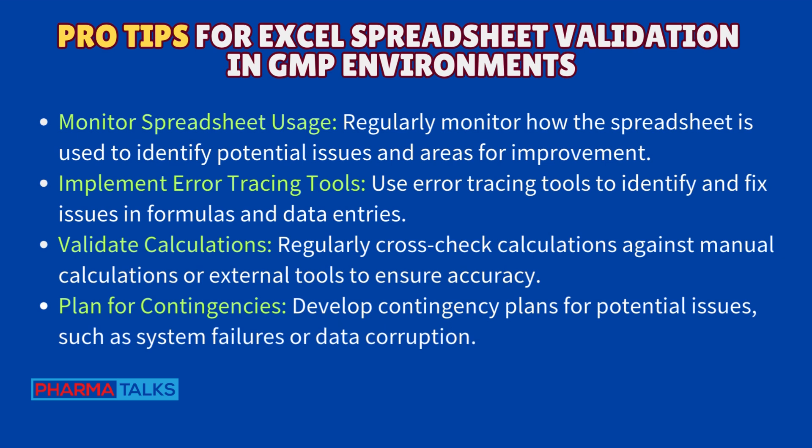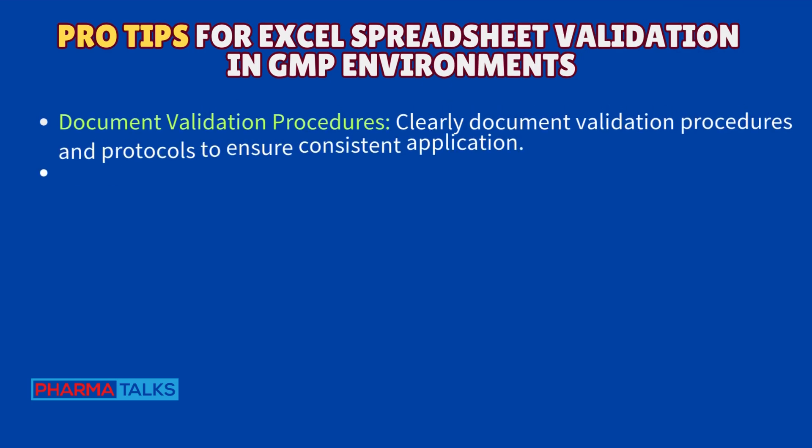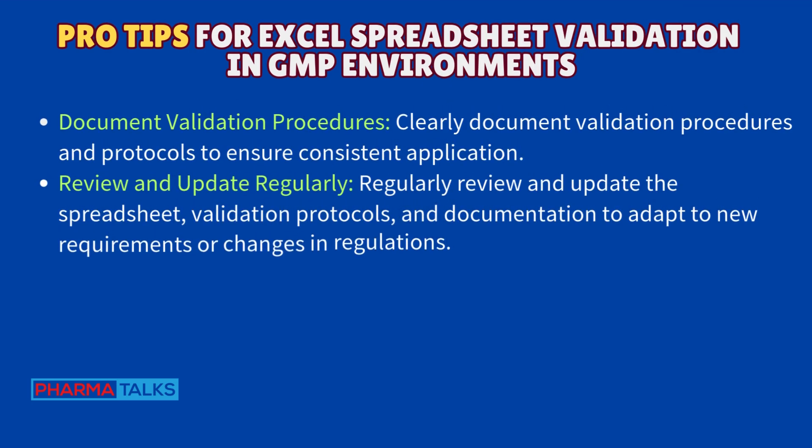Implement error tracing tools — use error tracing tools to identify and fix issues in formulas and data entries. Validate calculations — regularly cross-check calculations against manual calculations or external tools to ensure accuracy. Plan for contingencies — develop contingency plans for potential issues such as system failures or data corruption. Document validation procedures — clearly document validation procedures and protocols to ensure consistent application. Review and update regularly — regularly review and update the spreadsheet, validation protocols, and documentation to adapt to new requirements or changes in regulations.